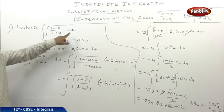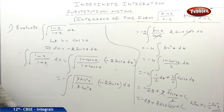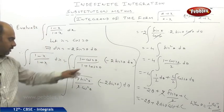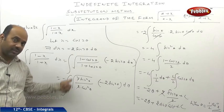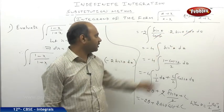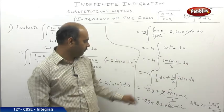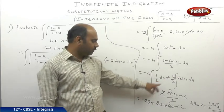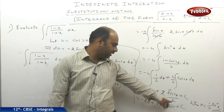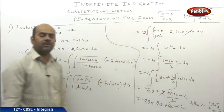To evaluate under root of (1 minus x)/(1 plus x) dx: put x equal to cos 2θ, dx equals minus 2 sin θ dθ. Under root of (1 minus cos 2θ)/(1 plus cos 2θ) equals under root of (2sin²θ)/(2cos²θ) equals tan θ. With minus 2 sin 2θ dθ, writing sin 2θ as 2 sin θ cos θ, cos θ cancels giving minus 4 sin²θ. Using sin²θ equals (1 minus cos 2θ)/2, we get minus 4 times (1/2)dθ plus (4/2) cos 2θ dθ, which gives minus 2θ plus 2 sin 2θ/2 plus c, equals minus 2θ plus 2 sin θ cos θ plus c, where θ equals (1/2) cos⁻¹ x.